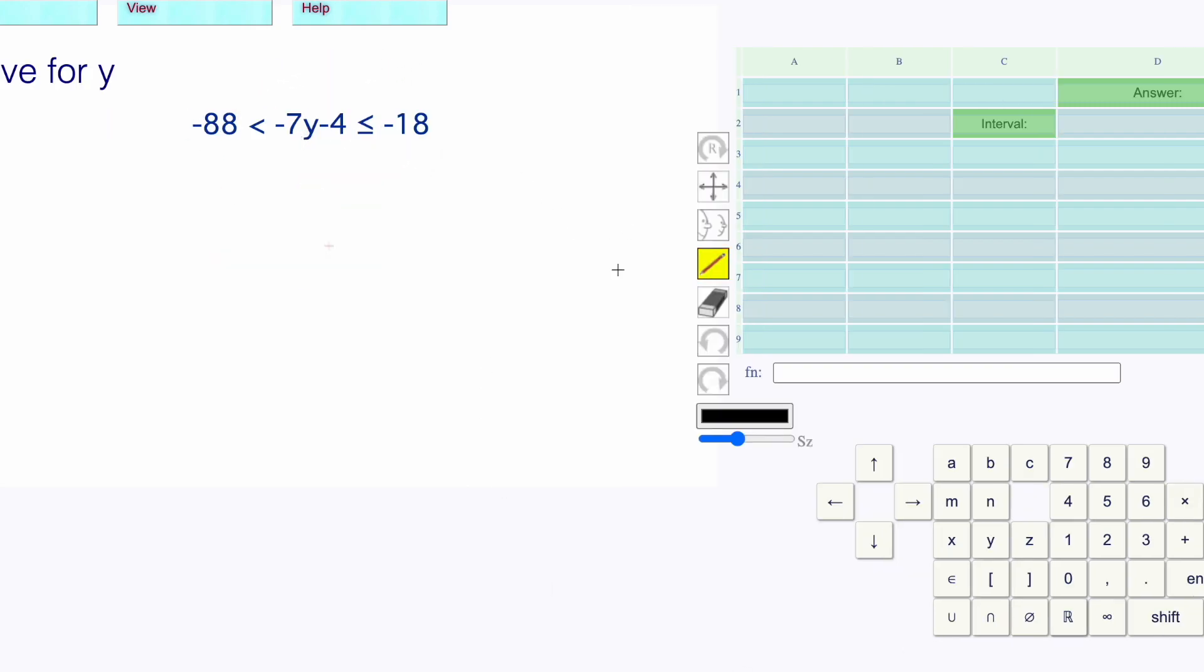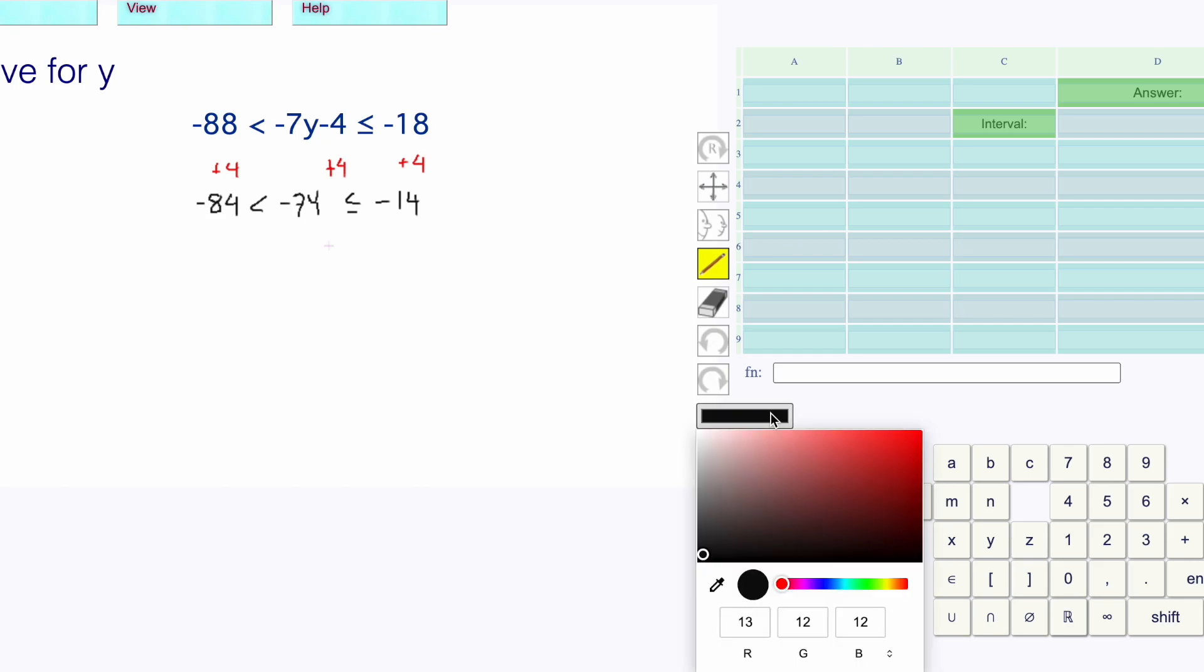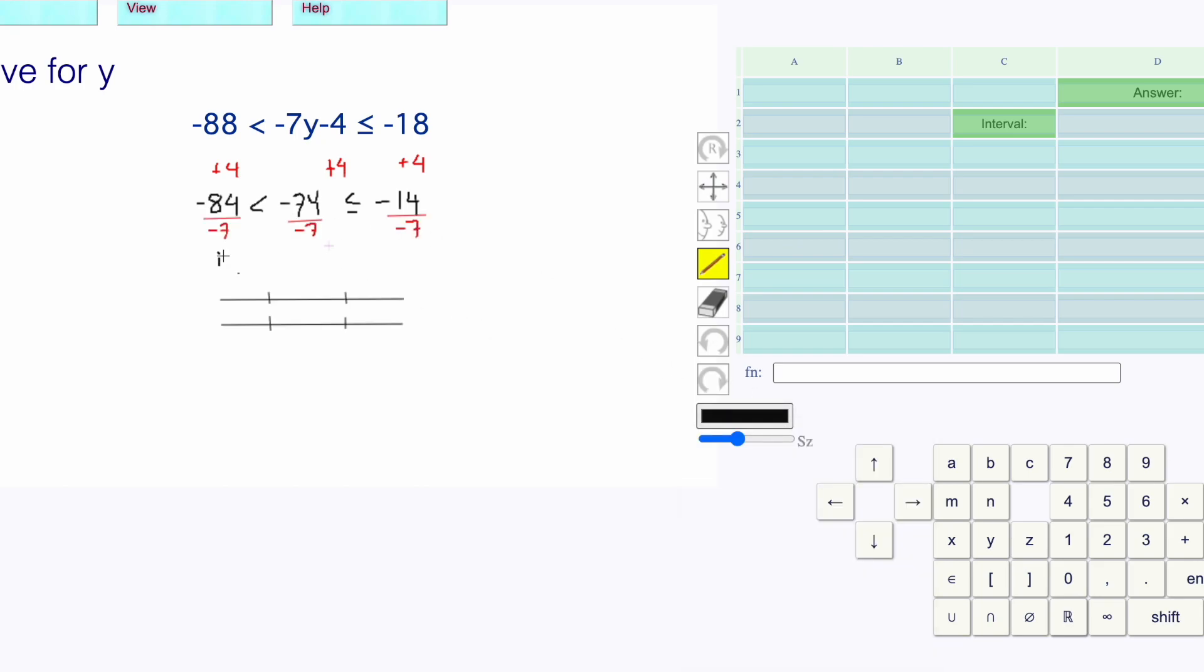I'm going to split it into two equations. You don't have to do that. If I added 4 to all sides, negative 84, then we're going to divide all sides by negative 7 to get the y alone. Dividing by negative flips the direction of the sign. 12 is greater than y is greater than or equal to 2.